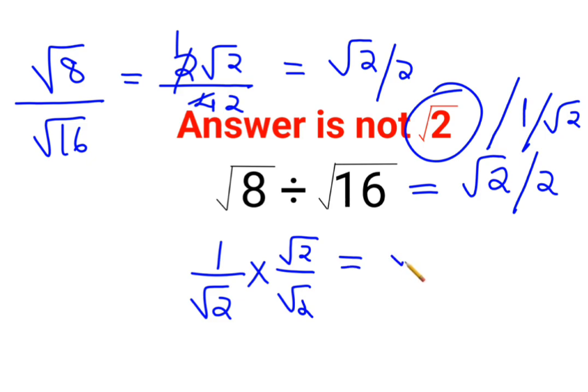So when you do that, this becomes root 2 upon root 2 multiplied by root 2 is just 2. So I hope this is very clear to everyone.